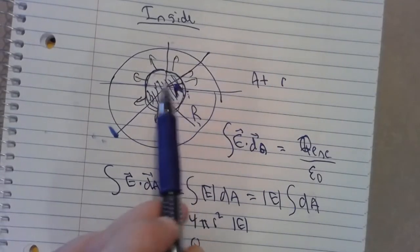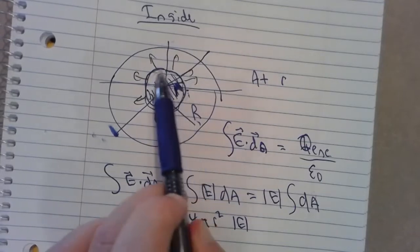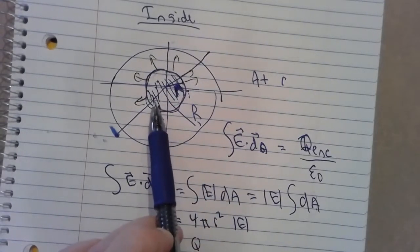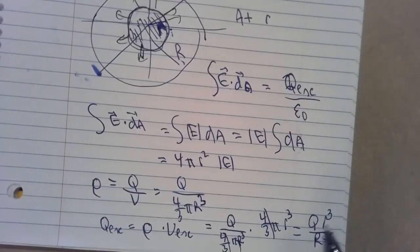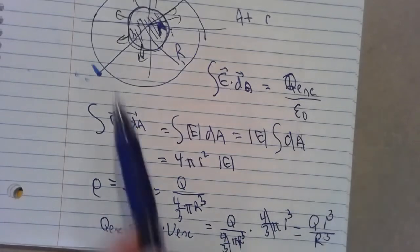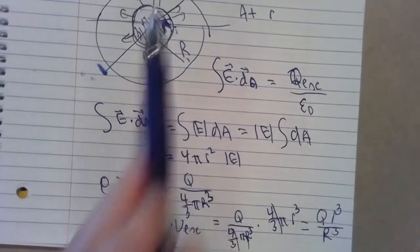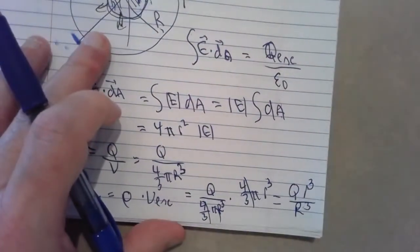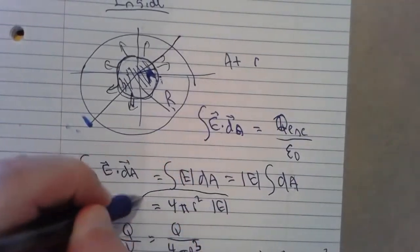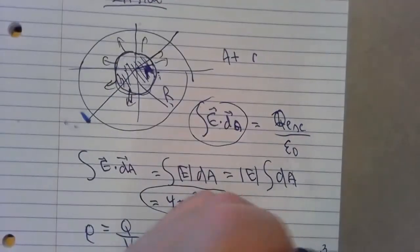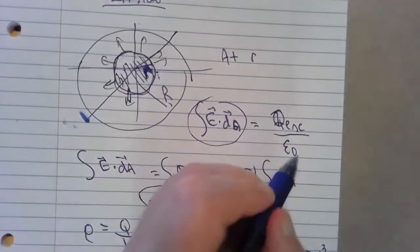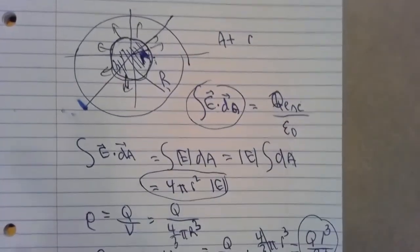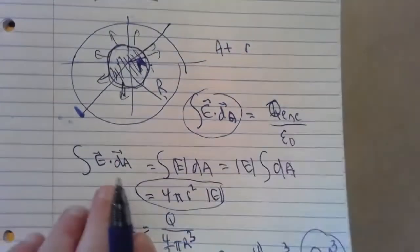Notice: if you're halfway out — at r = R/2 — you haven't captured half the charge. You'd have (1/2)³ = one-eighth of the total volume, because volume goes like r cubed. If you go halfway out, you've only captured one-eighth of the volume. Now I take the left-hand side and set it equal to Q enclosed over epsilon naught.